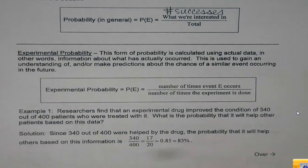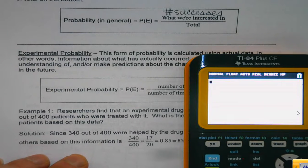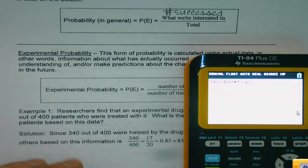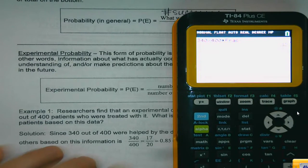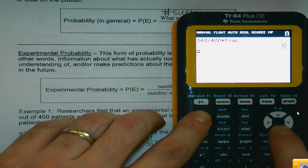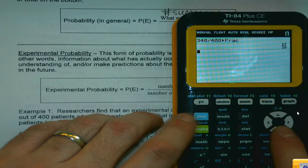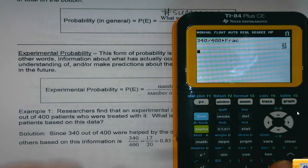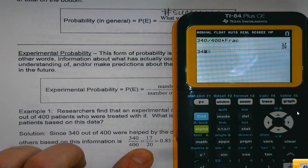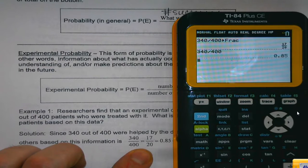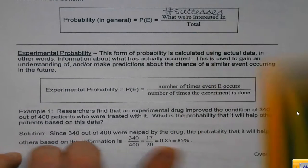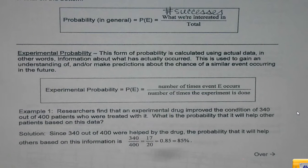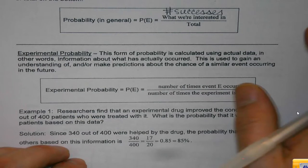So depending on how you want to write your answer, I could do 340 divided by 400 and do math, enter. I get 17 out of 20, which I see here. I could do 340 divided by 400 and just hit enter and get the decimal form, 0.85, or multiply it by 100 and get 85%. They're all equivalent.